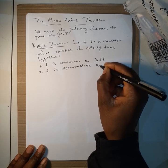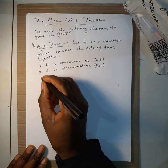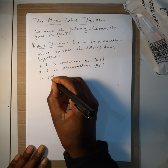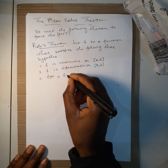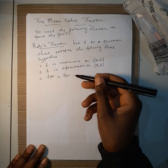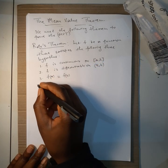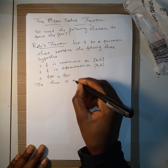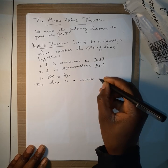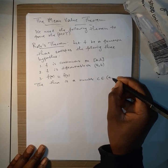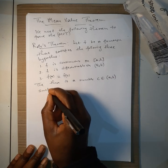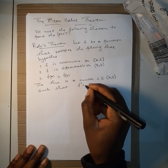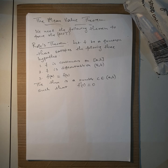Hypothesis two: F is differentiable on the open interval (a, b). Number three: when you evaluate F(a), you must get the same value as F(b). If all three conditions are satisfied, then there is a number C in the open interval (a, b) such that F prime of C is equal to zero.